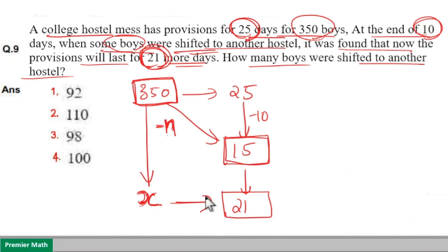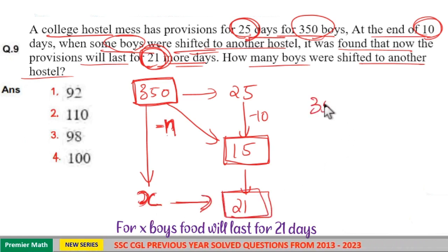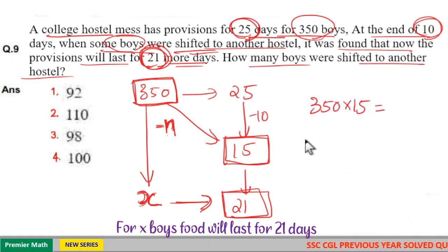Now, for this x number of boys, food will last for 21 days, which means 350 into 15 is the food remaining, which is equal to x into 21.